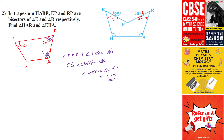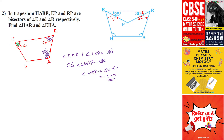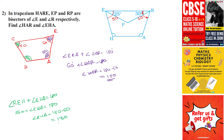Similarly, angle REH plus angle EHA equals 180°. Since angle REH is 50°, angle EHA equals 180° minus 50°, which is 130°. So angle EHA is 130° and angle HAR is 120°.